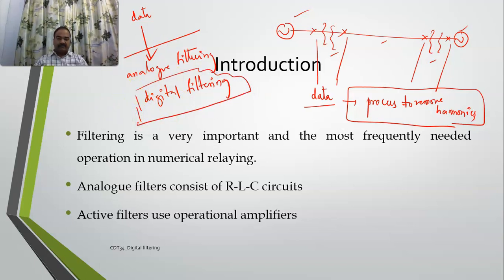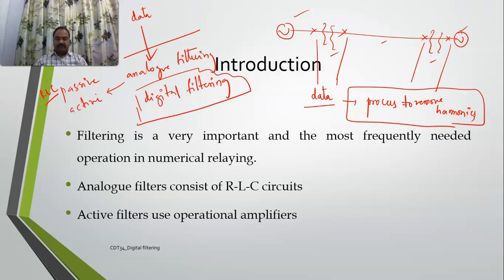Let us see the major difference between analog filtering and digital filtering. In analog filtering, there are two types: passive filters and active filters. For passive analog filters, we employ RLC components — simple RLC circuits are sufficient to design an analog passive filter. In the case of active filters, we employ transistors and operational amplifiers, op-amps.